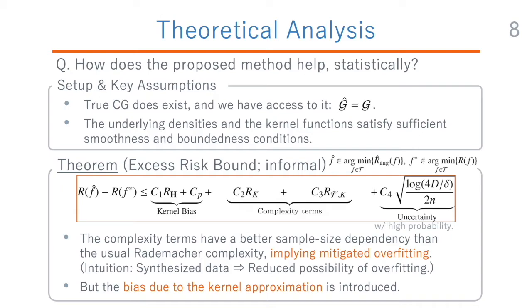Intuitively, the better dependency on the sample size can be understood as follows. The proposed method increases the number of data points, which makes it more difficult for the model to overfit to the data, effectively reducing the apparent complexity of the predictor's model class. We provide a formal assessment of this point in the paper. In summary, the theoretical analysis implies that the proposed method has a complexity reduction effect which mitigates overfitting, but at the cost of introducing the bias due to the kernel approximation.